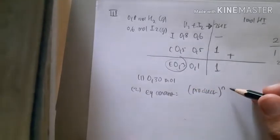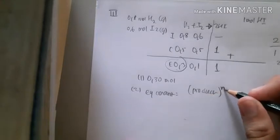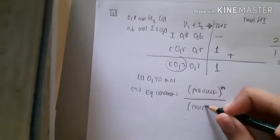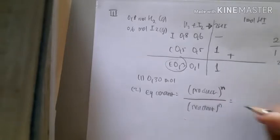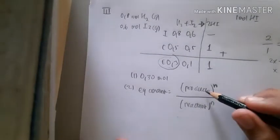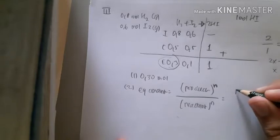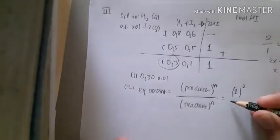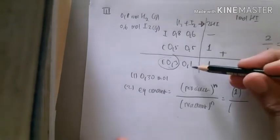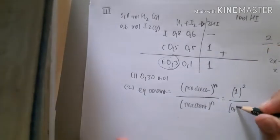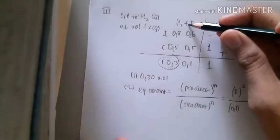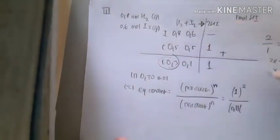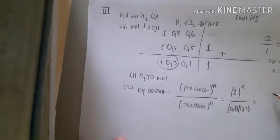The equilibrium constant is product raised to the power of its coefficient divided by reactants raised to their coefficients. So K = (1)^2 / (0.1)^1 × (0.3)^1.